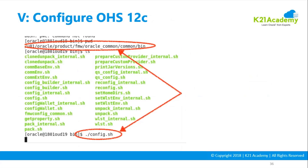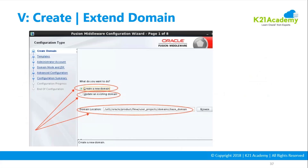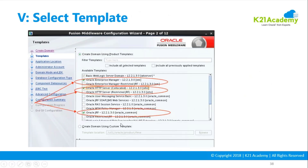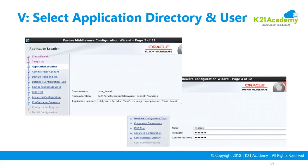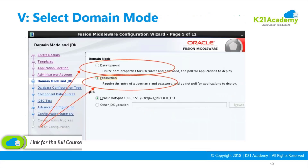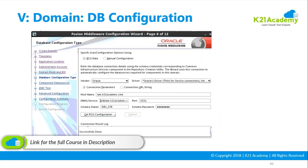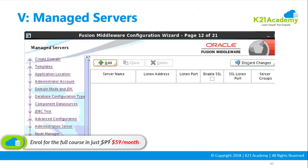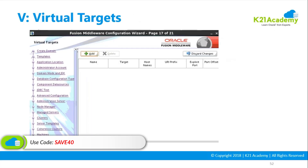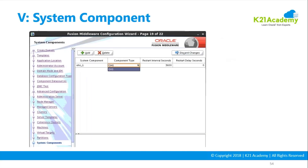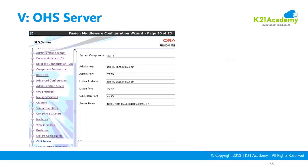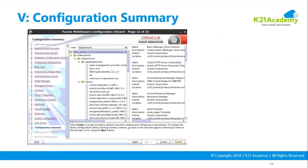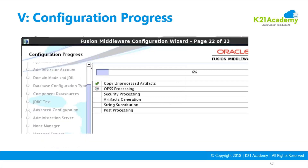You configure Oracle HTTP Server by running config.sh and say create a new domain. However, you will only get standalone mode as an option. You won't get all the other screens — you'll come straight to the system component screen, then the listener addresses, then the configuration summary and finish. It goes straight to those steps.